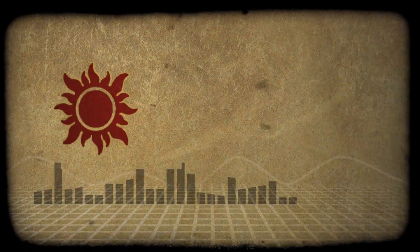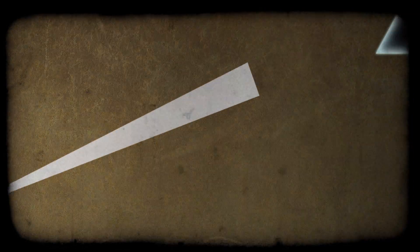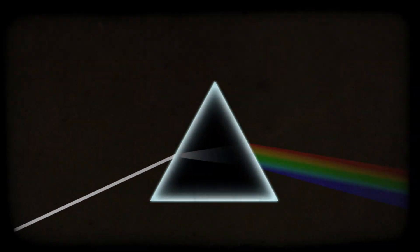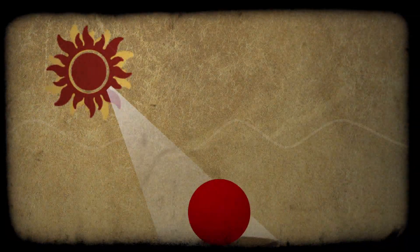So white light is made by a collection of many colors. We can observe this phenomenon using a prism, that separates white light into all colors of the rainbow, from red to violet.